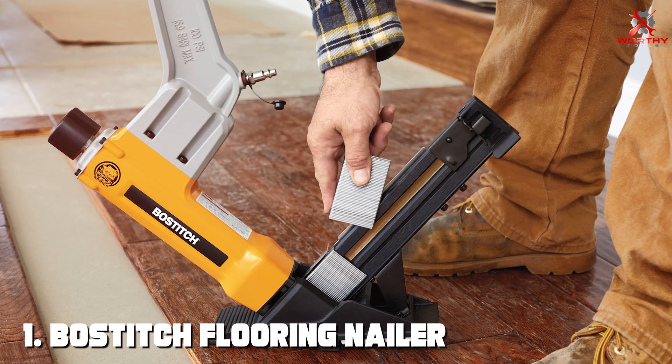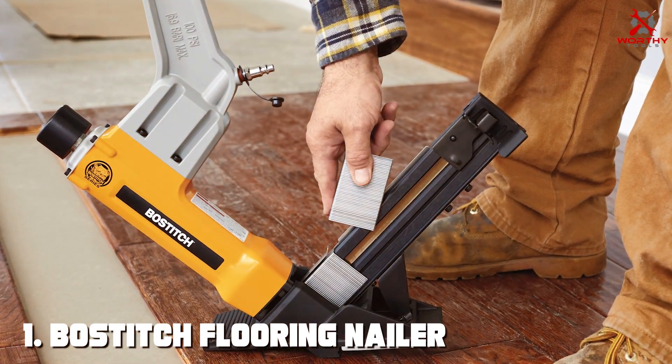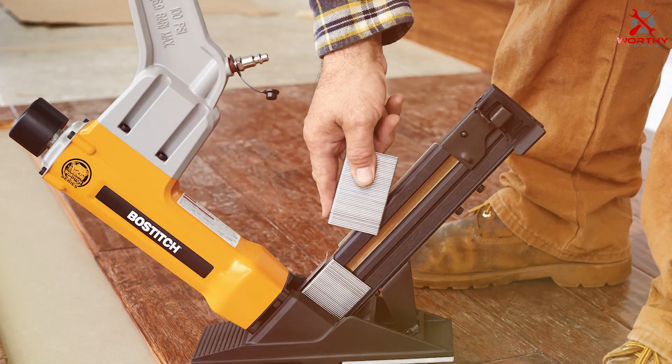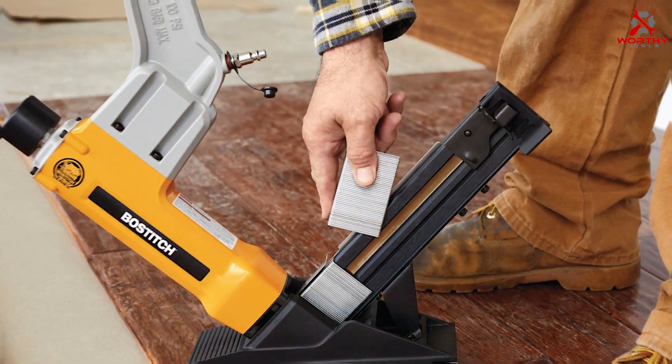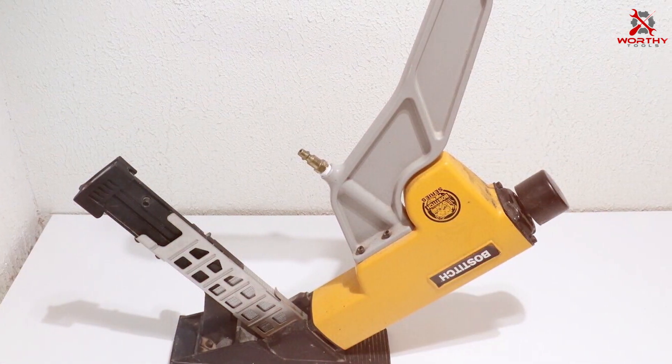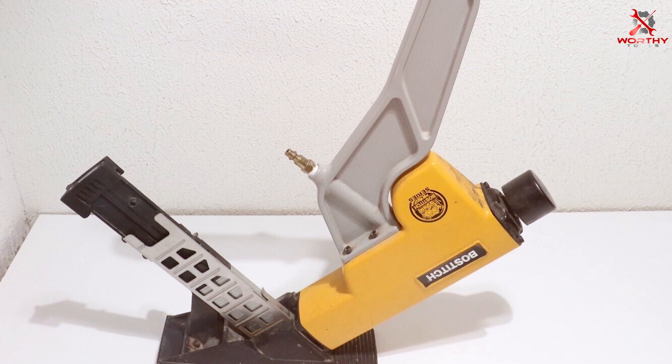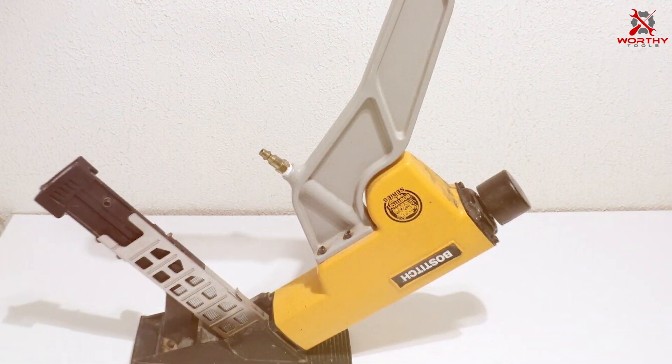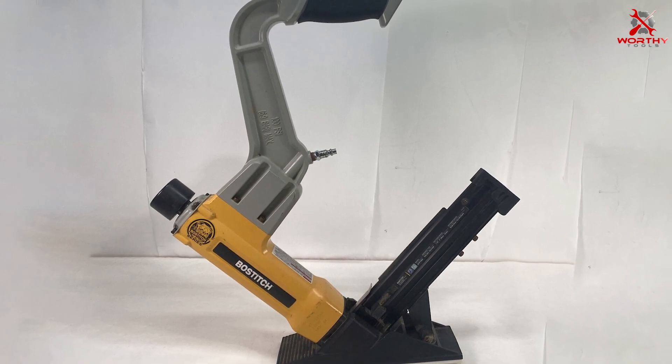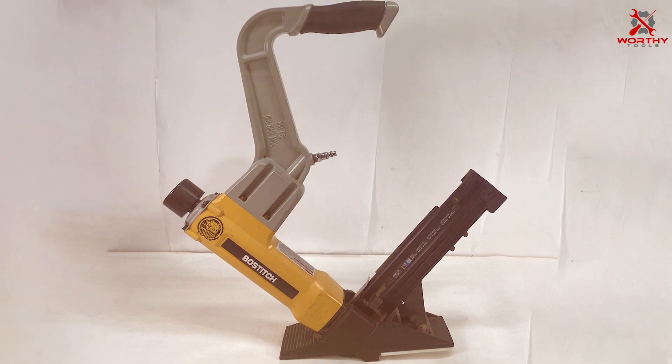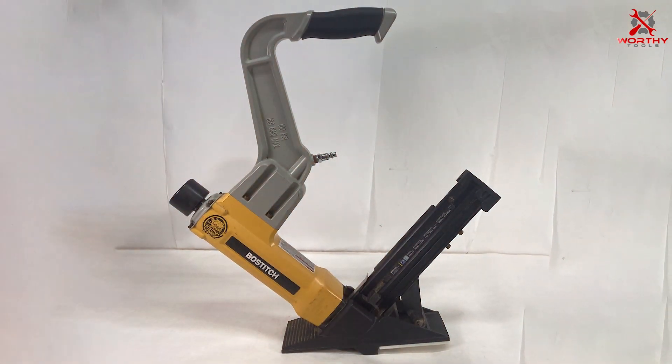Number one: BOSTITCH Flooring Nailer 2-in-1 BTFP12569. The BOSTITCH BTFP12569 is a versatile and robust tool, catering to both professionals and DIY enthusiasts. What sets this two-in-one flooring nailer apart is its dual functionality. It effortlessly switches between being a nailer and a stapler, offering flexibility for different flooring jobs.